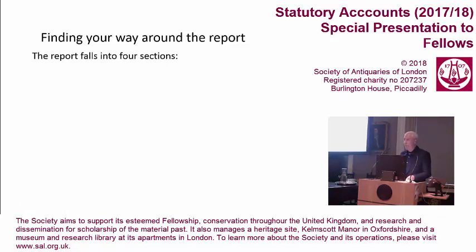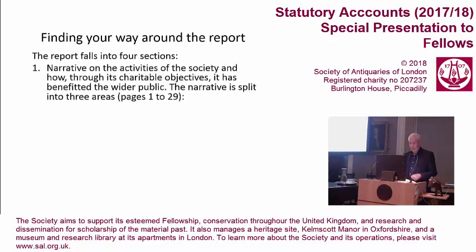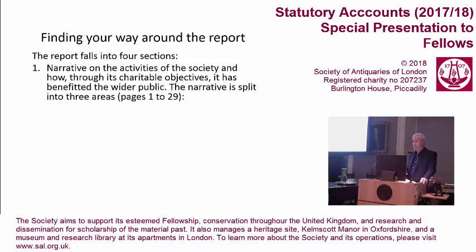In line with the statutory requirements, our annual report accounts is split into four sections. Firstly, the narrative on the activities of the society and how through our charitable objectives we've benefited the wider public. And that benefit to the wider public is a really crucial part of what we do. The narrative is split into three areas and they are on pages 1 to 29.